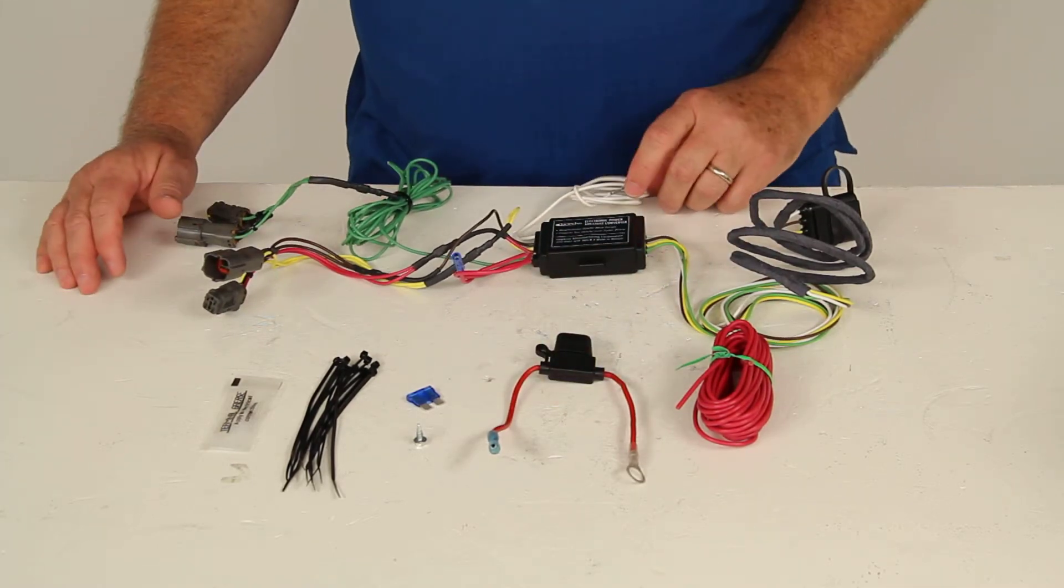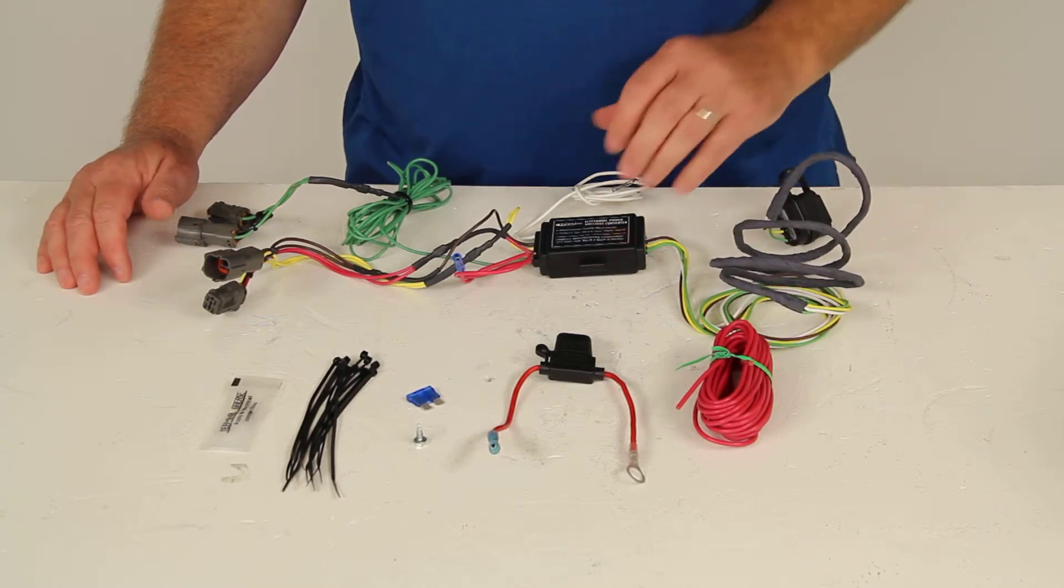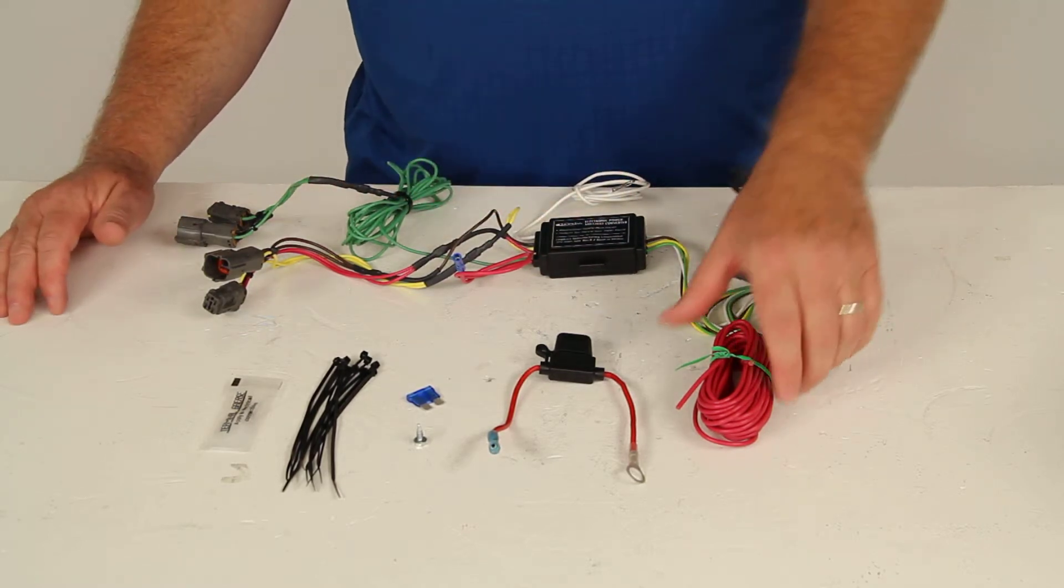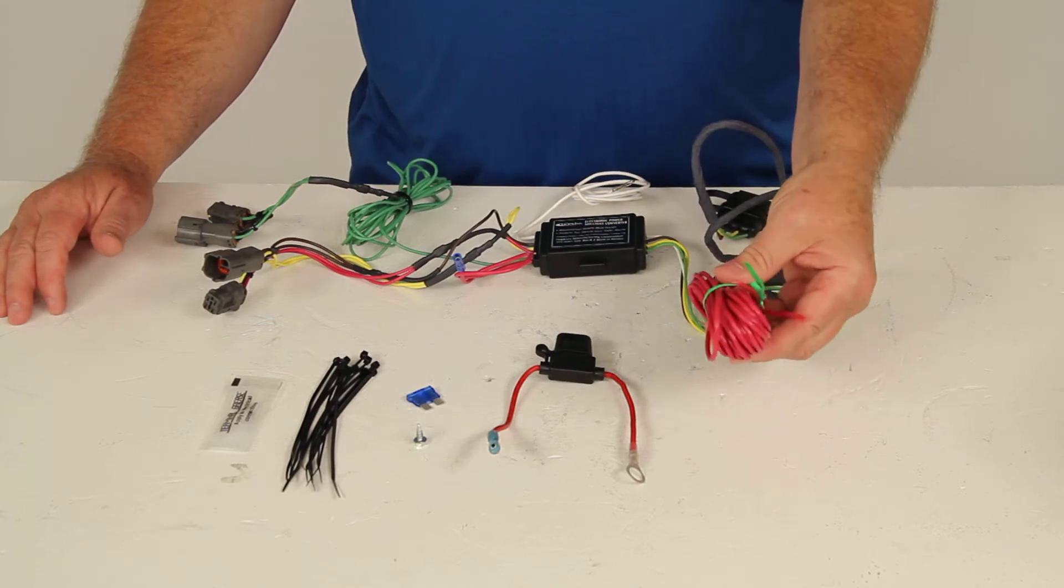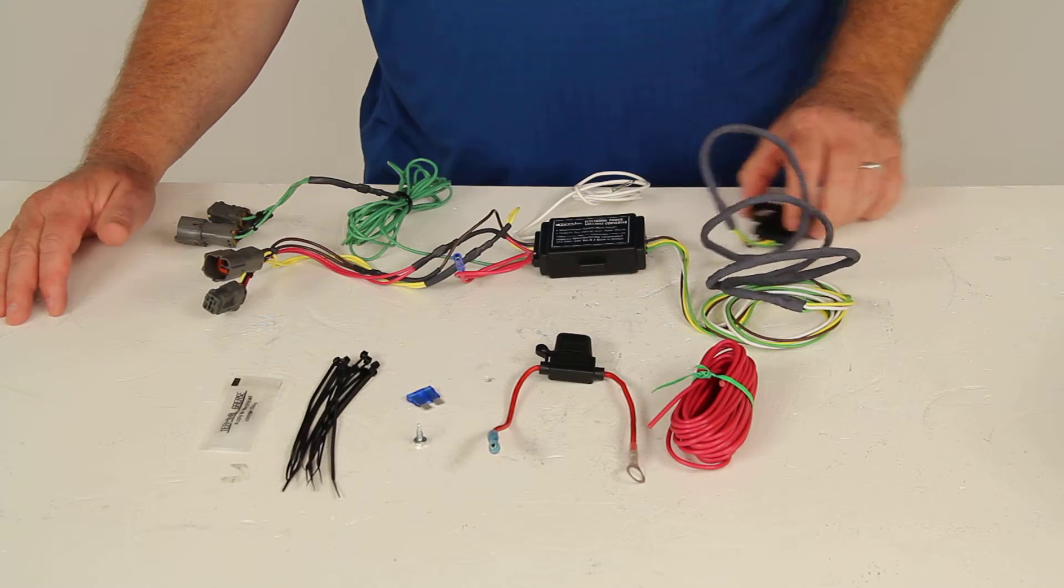Then once that's all done, you're pretty much ready to just hook up your trailer wiring harness to this and you're ready to go. It's a pretty simple setup. The only thing involved time-wise would be running this length of wire from the back of your car to the front, but otherwise it's a very simple installation.